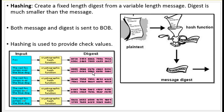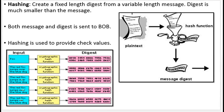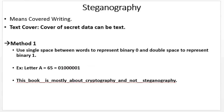The length of the two digests are the same, whereas the inputs are 'fox' and 'The red fox jumps over the blue dog,' which is much bigger than the first string. Hence, we can say that by choosing the appropriate hash function, we can make hashing an efficient cryptographic technique.